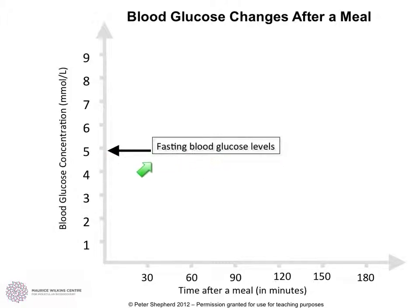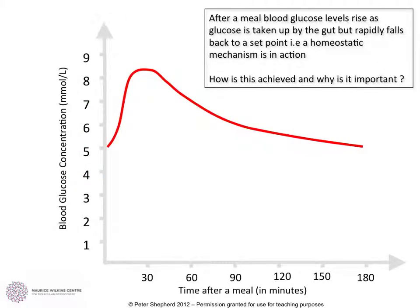The fasting blood glucose level — so this is basically before a meal, meaning between meals or without food — is around 5 millimolar, right in between our 4 to 7 range that we like to see. What we can see is that we get this big rise in blood glucose that actually goes above this magic 7 number, but then it rapidly decreases back down to the fasting level. We're going to step through this graph bit by bit and see how this is actually achieved.